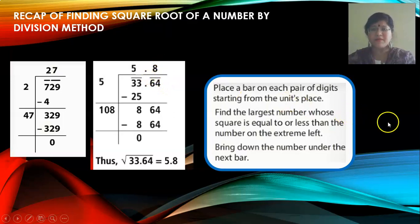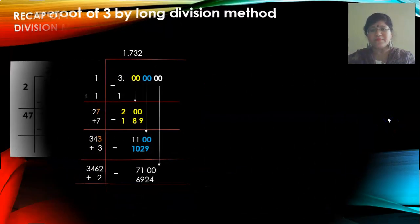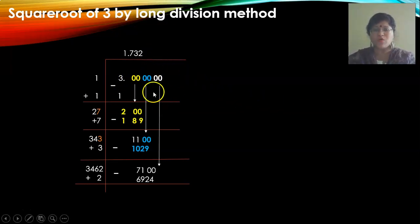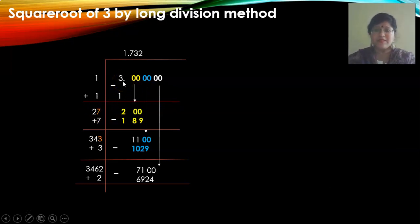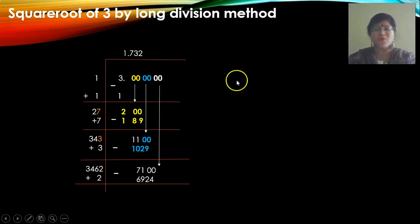Let us look at another problem: the square root of 3. You are all aware that root 3 is 1.732, but I have solved it out here for you. Root 3 is an irrational number. So I write the number 3 and add zeros after the decimal point — I am doing it up to 3 digits after the decimal.